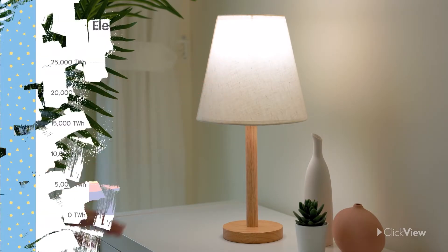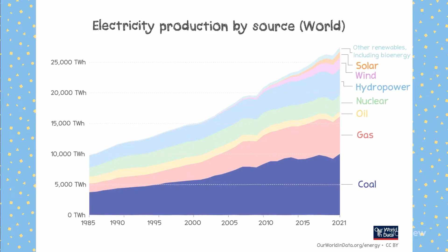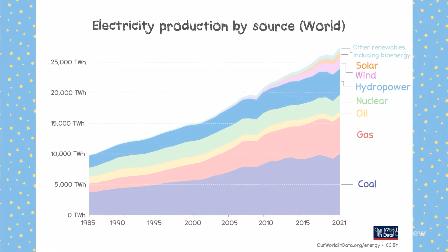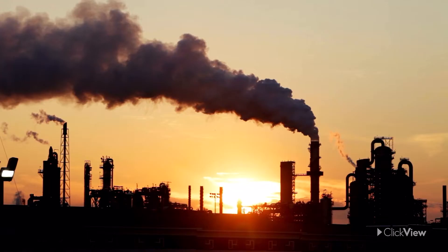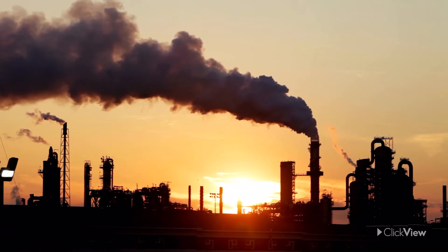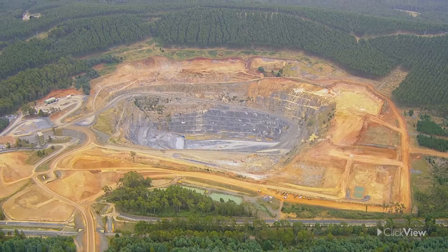Although it may differ between countries, most of the world's electricity is generated by fossil fuels — that is coal, gas, and oil. Hydroelectric or water power produces more energy than nuclear sources, and power from renewable resources such as wind and solar currently produce the least.